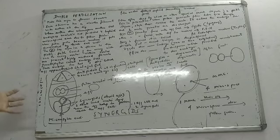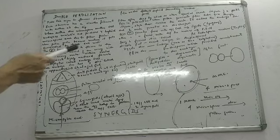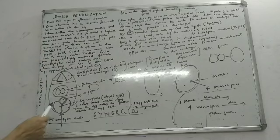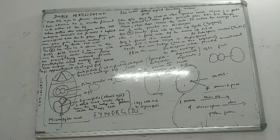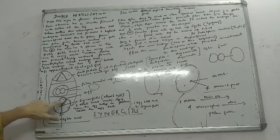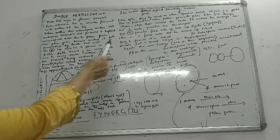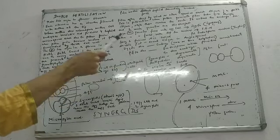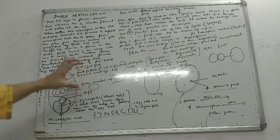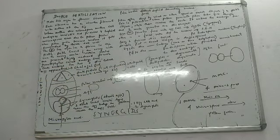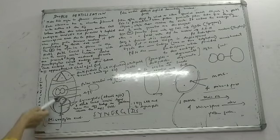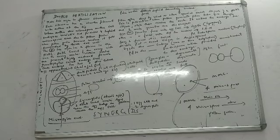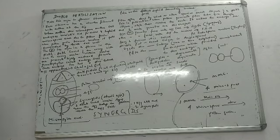Double fertilization is called so because two types of fertilization take place. In the first fertilization, the first male gamete fused with the egg to produce a zygote, which will develop into the embryo. In the second fertilization, the second male gamete fused with the secondary nucleus to produce PEN (Primary Endosperm Nucleus), which forms the endosperm. The endosperm will provide nourishment to the developing embryo. After fertilization, the synergids and antipodals both degenerate.